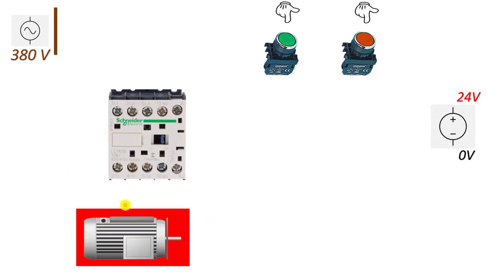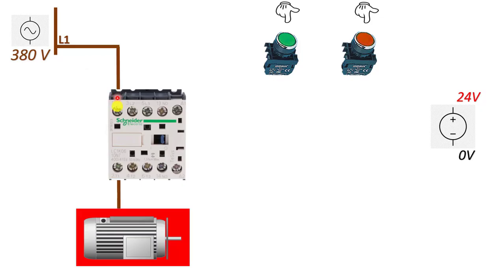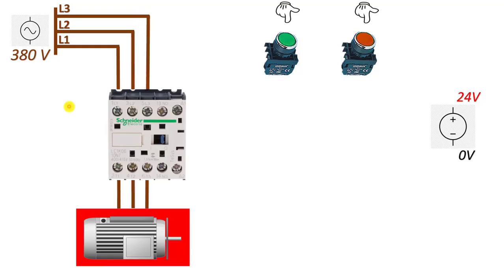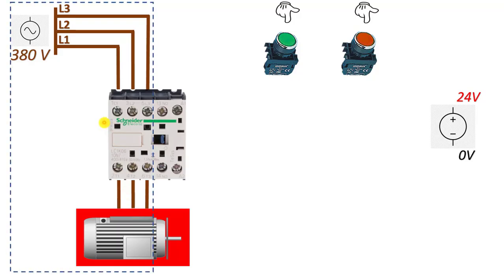The load we want to control is a three-phase asynchronous motor. I connect three phases of mains voltage to the three main contacts of the contactor. I take the L1 phase and enter the first L1 leg of the contactor, then get the output and connect the motor. Then I connect L2 to the second main contact, and L3 to the third contact. This way, all three phases are connected to the input of the three main contacts and the output goes to the three-phase motor — this is my power circuit.